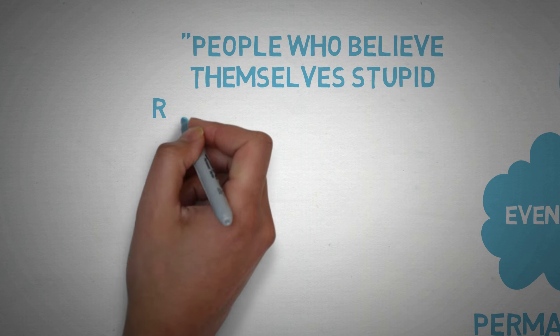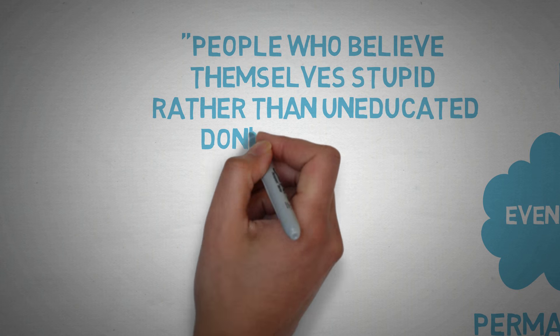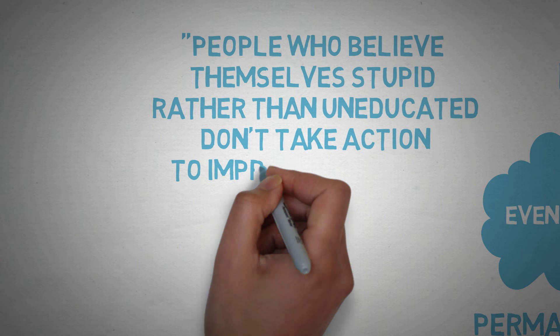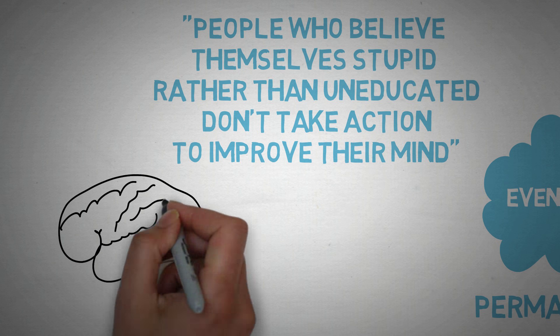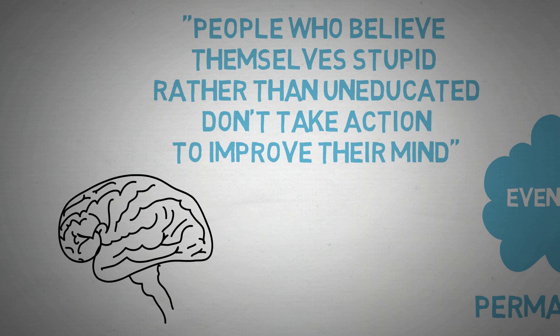There's also a quote in this book that I really like. It is, People who believe themselves stupid rather than uneducated don't take action to improve their mind. And that is, some cultures believe that when you're growing up, stupid is a characteristic trait that cannot be changed.